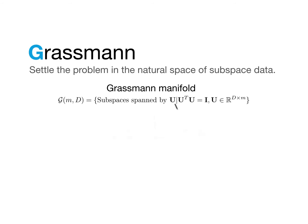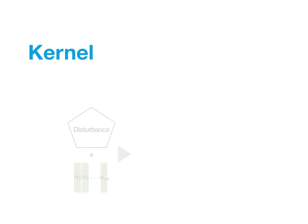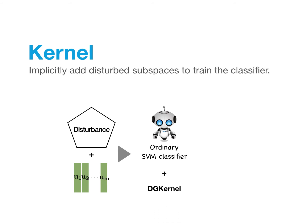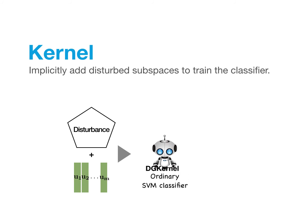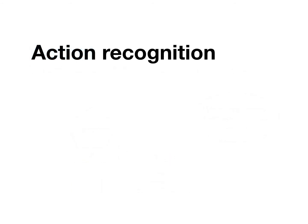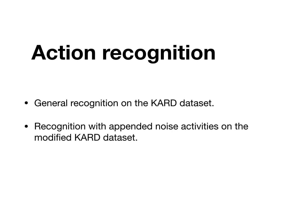The Grassmann manifold contains subspaces of the same dimensionality in the same Euclidean space. Subspaces are artificially disturbed on the Grassmann manifold for training. Since explicitly adding disturbed subspaces is very time-consuming, we implicitly add disturbed subspaces to train the classifier. As a result, only a new kernel along with a proper disturbance distribution is needed to make the SVM classifier much smarter. To evaluate the DG kernel, action recognition tasks are executed on different datasets, including general recognition on the CARD dataset, recognition with appended noise activities on the modified CARD dataset, and action recognition in low latency on the UCF Connect dataset.